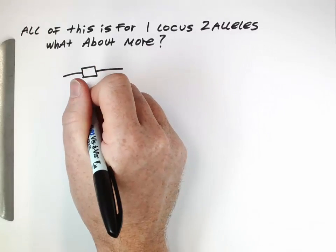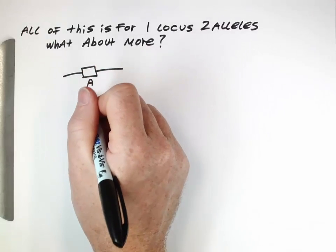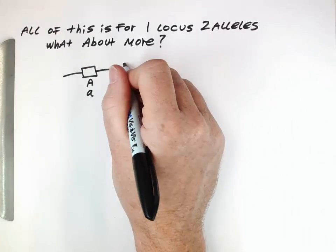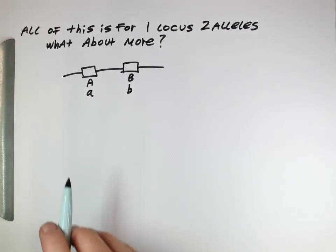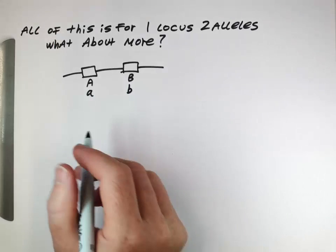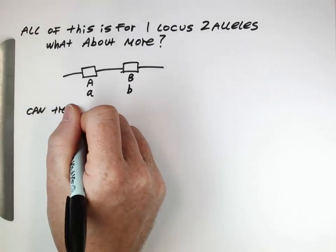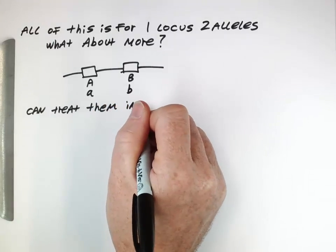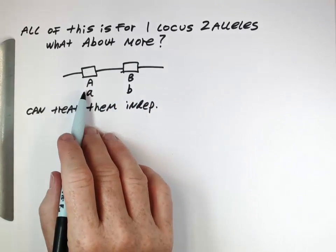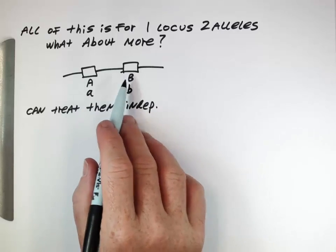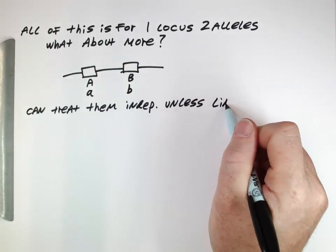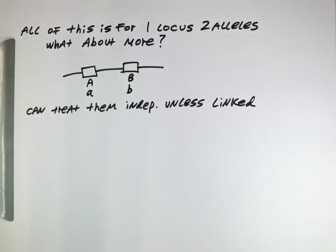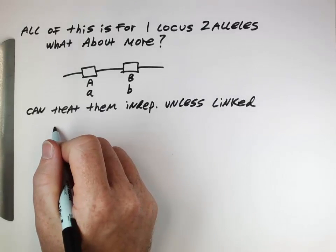Instead of thinking about a single locus on a chromosome with two alleles, now we'll start thinking about two loci on a chromosome each with two alleles. When you have a situation like this with two loci and two alleles, it turns out you can actually treat them independently — you can worry about each one all by itself and not worry about how they interact with each other, unless they are linked in some way, unless there's some sort of relationship between the alleles at these different loci.